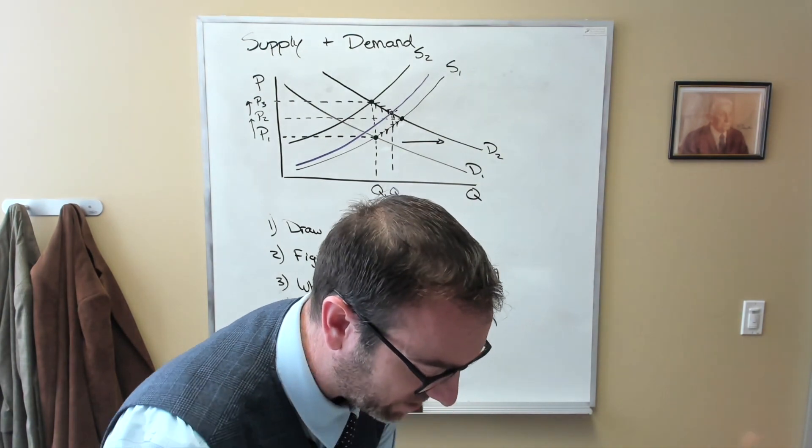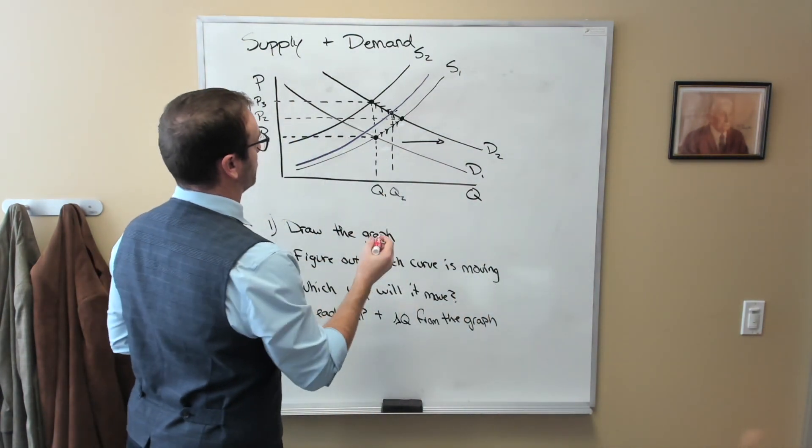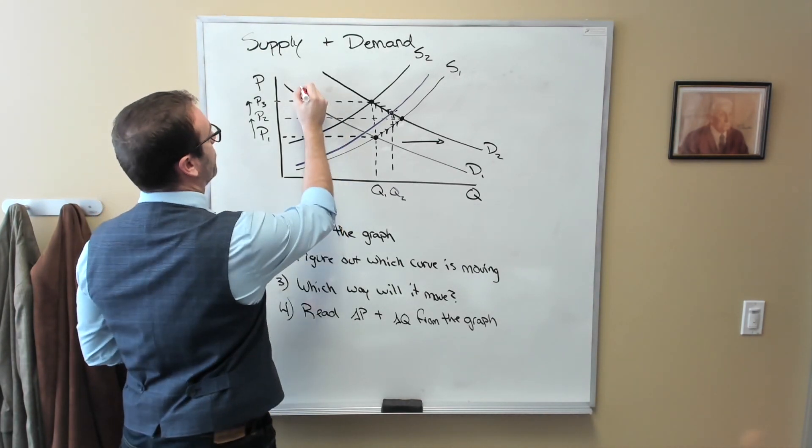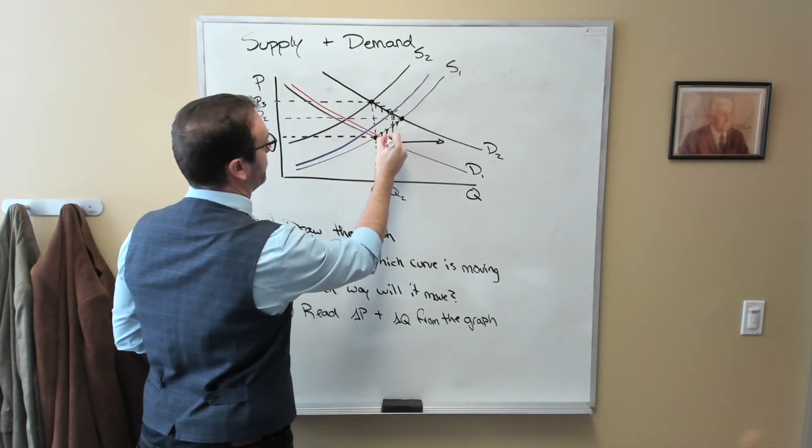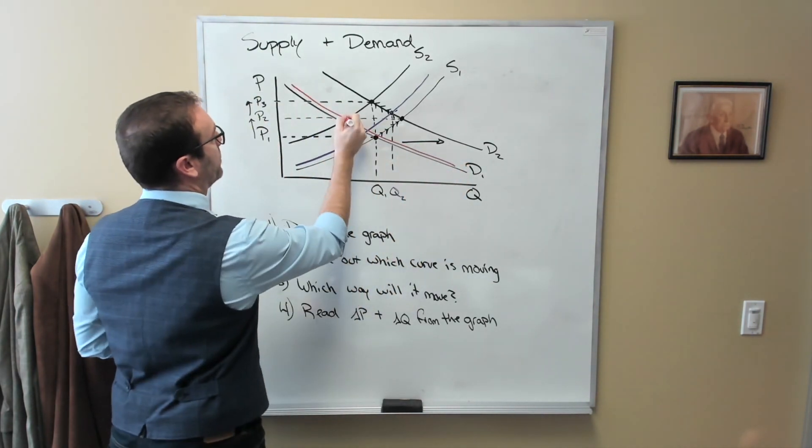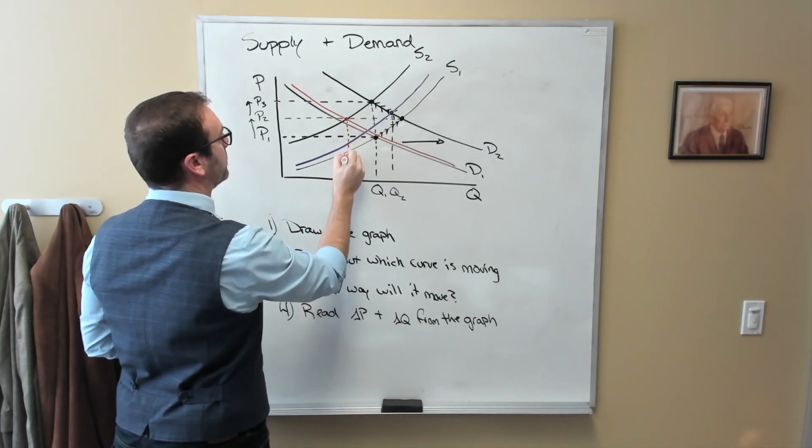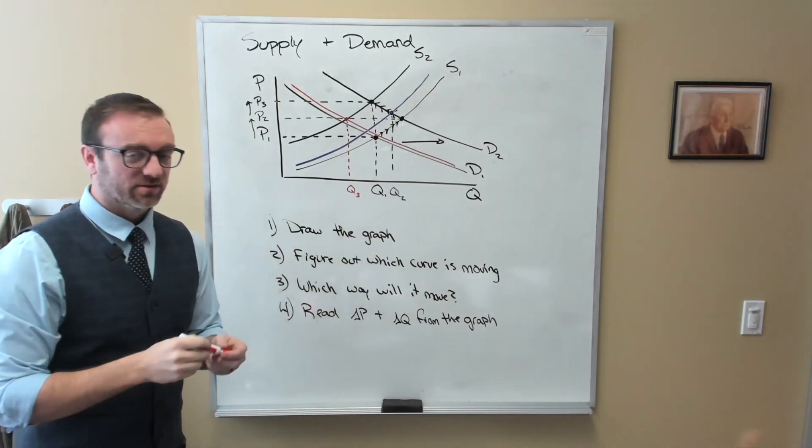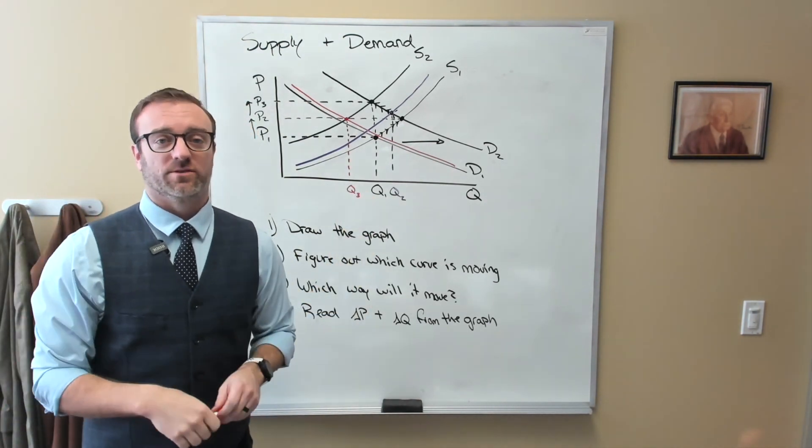Conversely, if we had a very small increase in demand, but a very large decrease in supply, well then that would be something like this. And we would see our equilibrium point being here. And we would get the increase in price, but we would have a decrease in quantity.